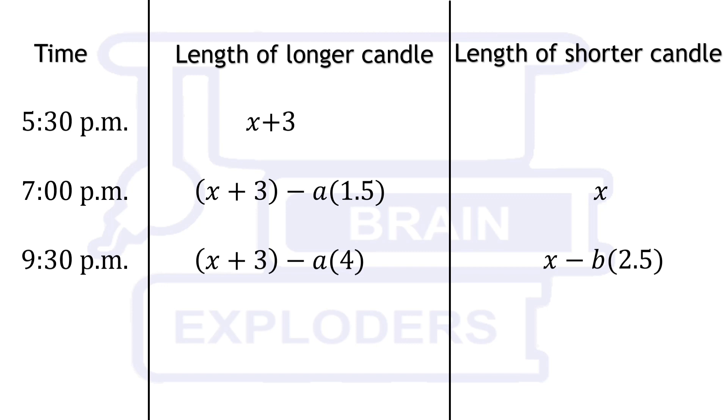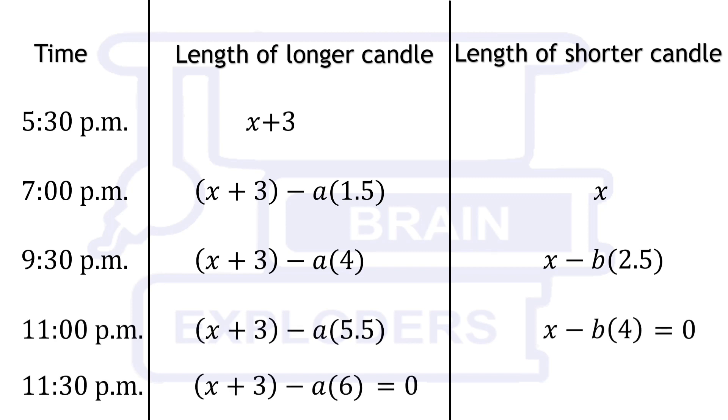At 9:30 pm, length of longer candle is decreased by 4a and shorter candle is decreased by 2.5b. In this way, you can calculate for other times also. At 11 pm, shorter candle burns out therefore x minus 4b is equal to 0.